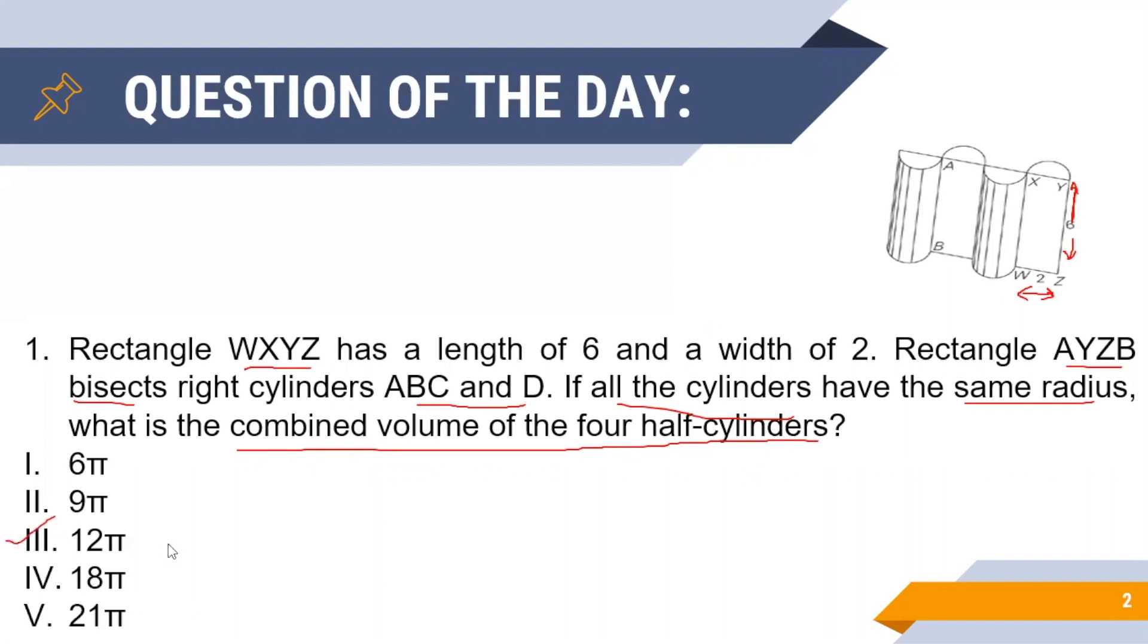Now let us see how we arrived at this particular answer. As you can see from the figure, the four half cylinders equal two full cylinders of diameter 2 and height 6.